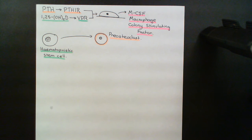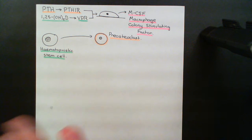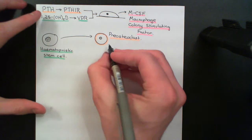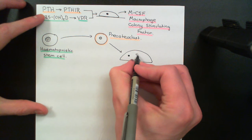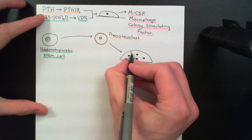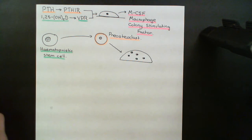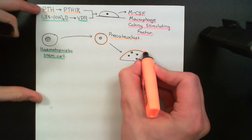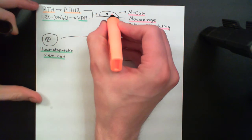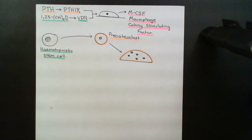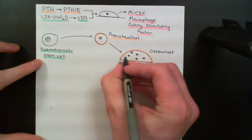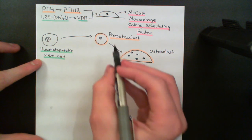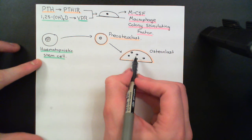Now, how do pre-osteoclasts actually form osteoclasts? The osteoblasts have a big role in this as well. In order for pre-osteoclasts to fuse together to make a giant osteoclast on the surface of bone, the process requires the pre-osteoclasts to be stimulated by a certain molecule, which will be produced by the osteoblasts stimulated by parathyroid hormone and 1,25-dihydroxyvitamin D.